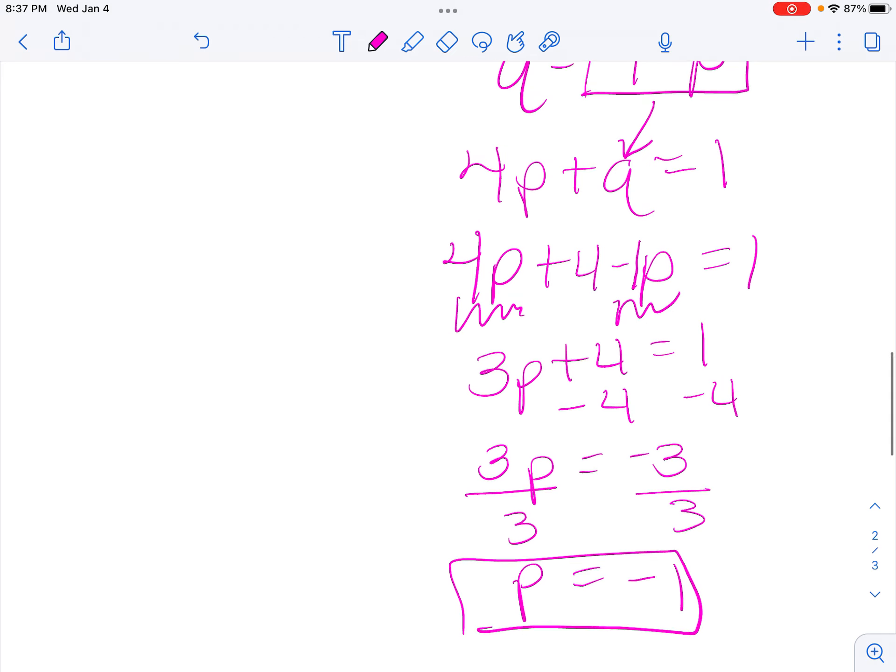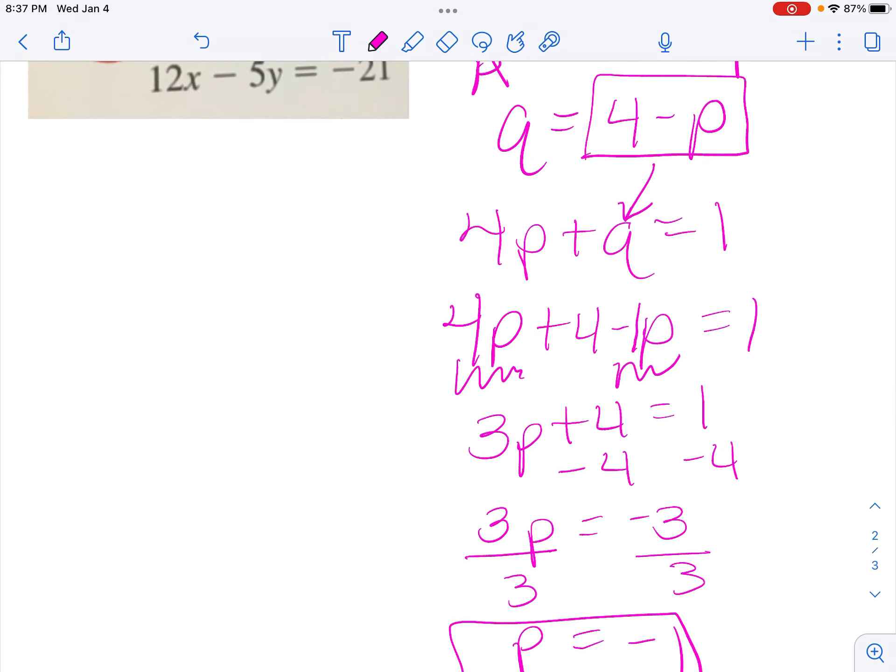So now I'm going to come up here to my q equals 4 minus p equation, and I'm going to substitute negative 1 everywhere there's a p. So q equals 4 minus negative 1. So q equals 5.